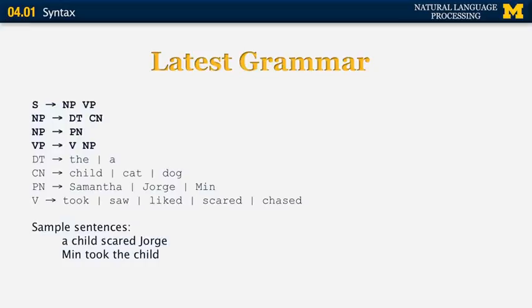The grammar has grown a bit. S produces NP and VP. We now have two rules for noun phrases: a determiner plus common noun, or a proper noun. The verb phrase includes a verb and a noun phrase. This expanded grammar allows us to produce sentences such as a child scared Jorge or Min took the child.